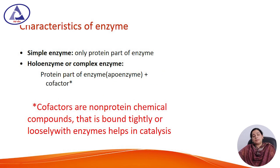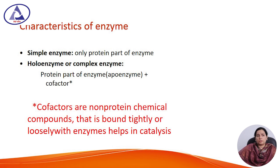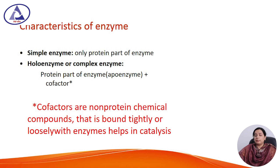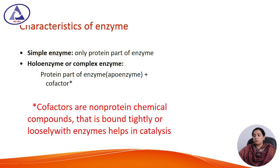A simple enzyme consists of only the protein part of the enzyme. As we know, most enzymes are protein in nature. I will discuss mainly about protein enzymes. A holoenzyme or complex enzyme is made up of a cofactor plus an apoenzyme — the protein part of the enzyme. These two components together create the holoenzyme or complex enzyme.